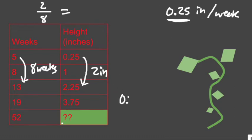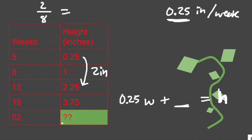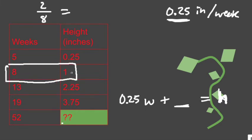Direct formula, 0.25 X, or maybe we can say W, 0.25 W, plus something equals the height. And the hardest part with this is finding that something. If you remember what we did from the other situation is we just grabbed one position. And I'm going to take this position, 8, 1, so I don't have to deal with the decimals. In the eighth week, I want this plant to be one inch tall.